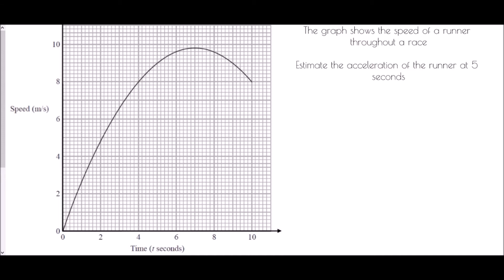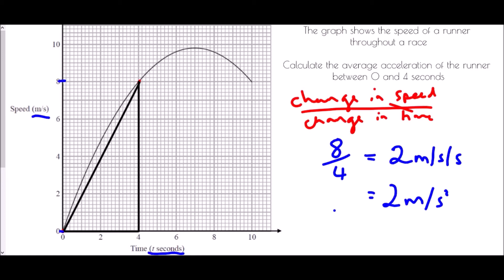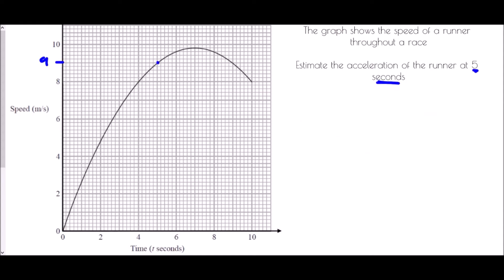Now we're asked to estimate the acceleration of the runner at five seconds. This is very important — it's at a single point in time. We can read off that person's speed at five seconds: it would be nine meters per second. But we can't directly register an acceleration, so like the previous question where we found a gradient, we need a line from which we can work out a gradient. We're going to introduce a line and move it around until it forms a tangent to the curve at that point.